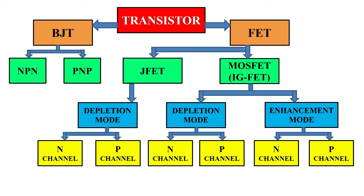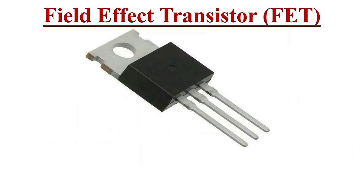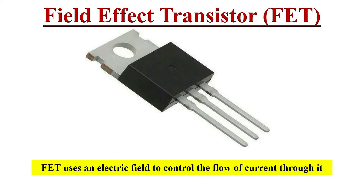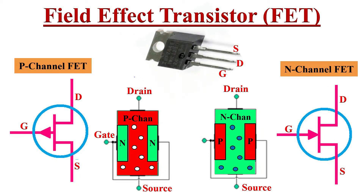The transistor family tree is shown in this block diagram. We will focus on JFET in this video. A field effect transistor is a type of transistor that uses an electric field to control the flow of current through it. It has three terminals: gate, drain, and source. FETs are unipolar devices, which means the current conduction is by one type of charge carrier.